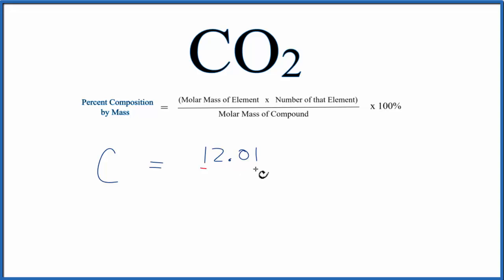We'll divide that by the molar mass of the entire compound. So for CO2, if we add up the atomic mass for the carbon and the two oxygens, we'll get a molar mass of 44.01 grams per mole. So let's put the 44.01 on the bottom, multiply by 100, and that gives us 27.29% as the percent composition of carbon in this CO2 molecule.